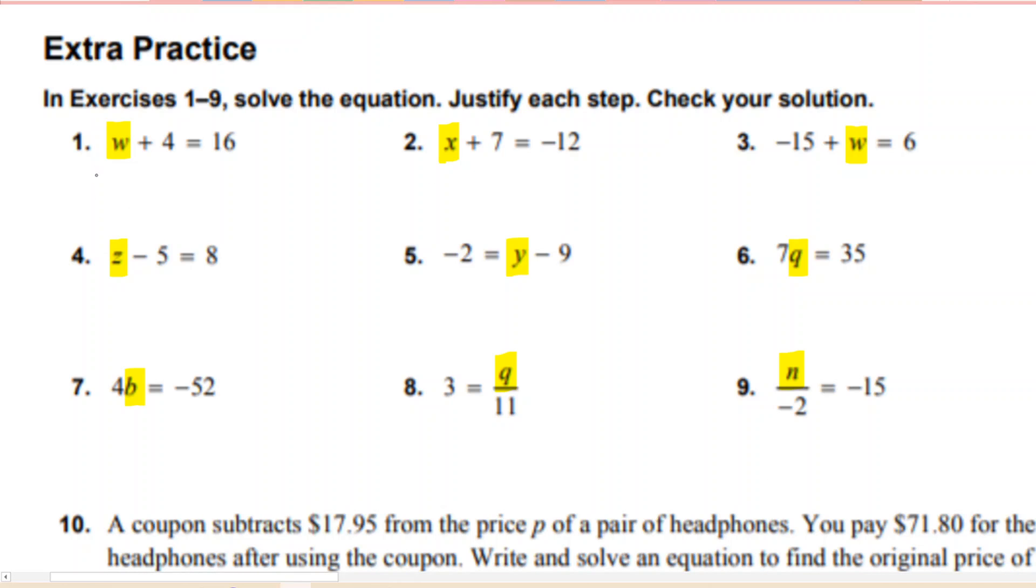So I'm going to take that w plus 4 equation that I started with, and it's still going to equal 16. But now I'm going to subtract 4 from both sides. And what that does is creates what we call a zero pair right there. W plus 4 minus 4, plus 4 and minus 4 is a zero pair. It means when I add them together, I get 0. So what I'm left with is just a w on that left side. Now on the right side, this is just arithmetic. 16 minus 4 is 12.